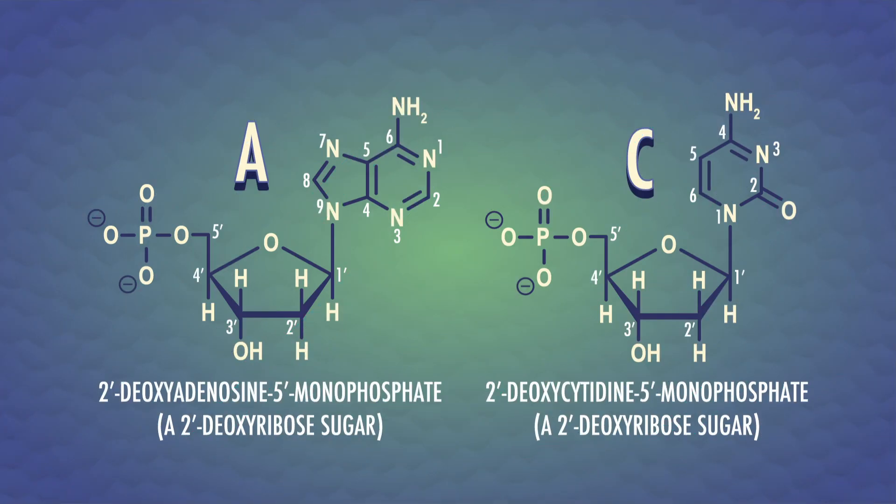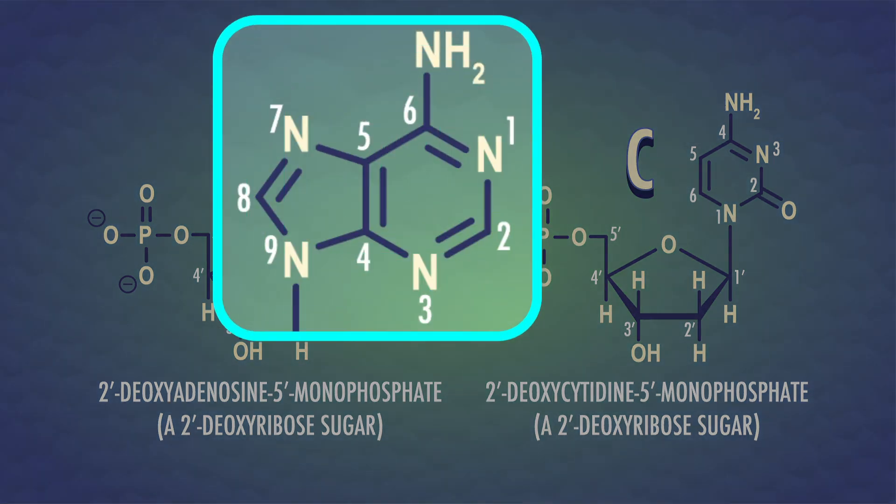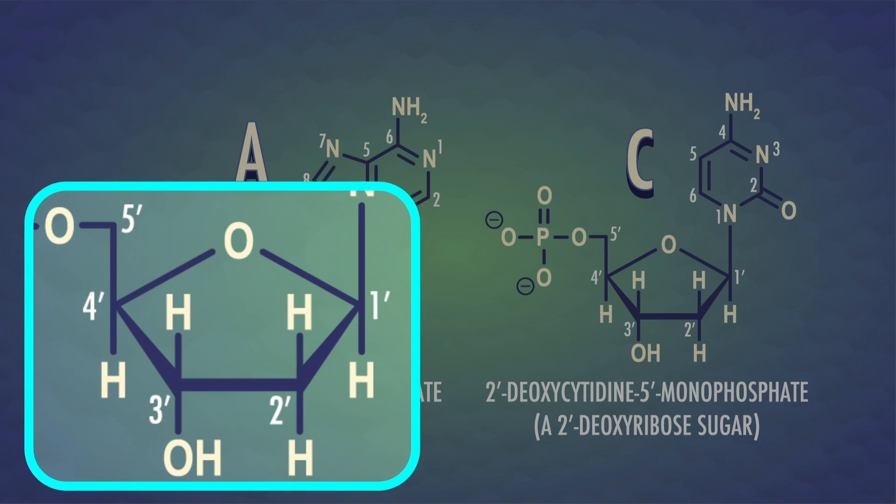Like usual, to talk about these molecules and name bonds, we label the atoms in each of the ring's structures. The nitrogenous bases get plain old numbers, and the positions of the carbohydrate are given numbers with prime symbols, starting with the anomeric carbon of ribose. Counting around the deoxyribose ring, here are the 1-prime, 2-prime, 3-prime, 4-prime, and 5-prime carbons.